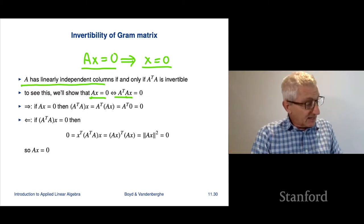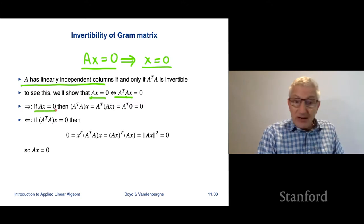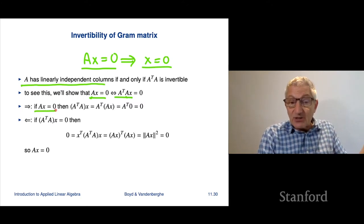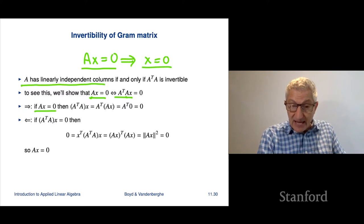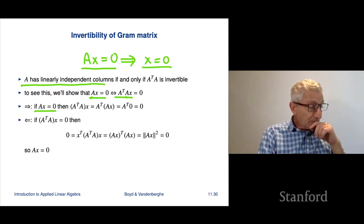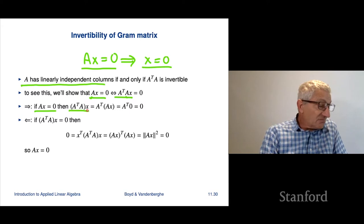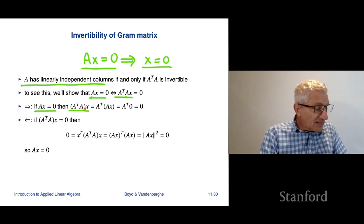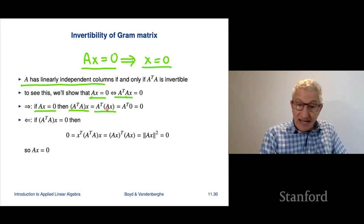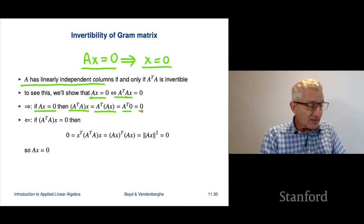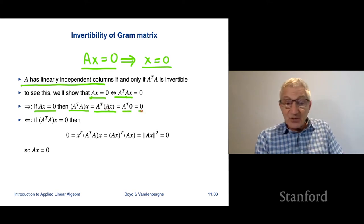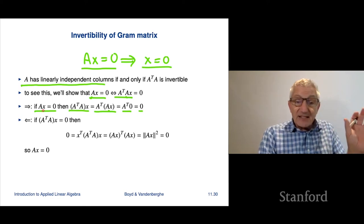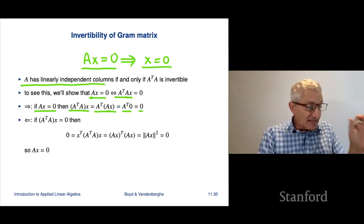So first, suppose Ax equals 0. Then we're going to show that A transpose Ax equals 0. We re-associate: A transpose Ax equals A transpose times (Ax). But Ax is 0, so this is A transpose times 0, which is 0. So if Ax equals 0, then A transpose Ax equals 0.